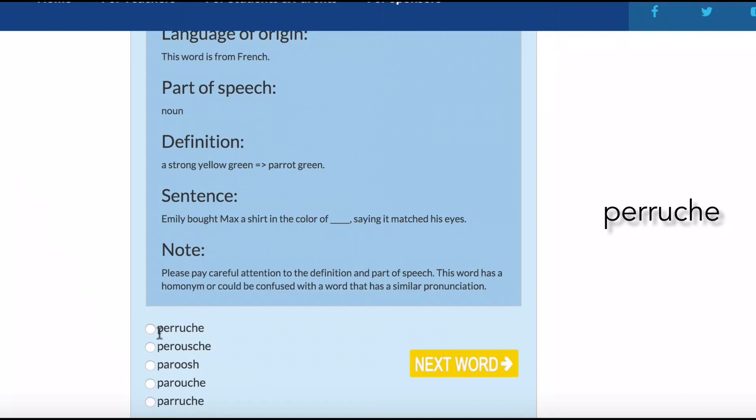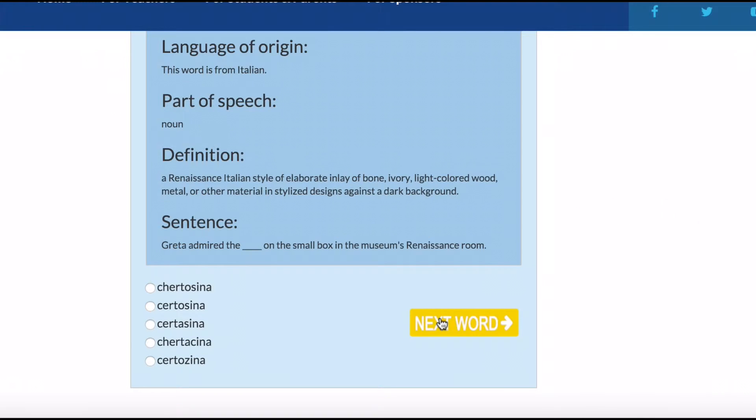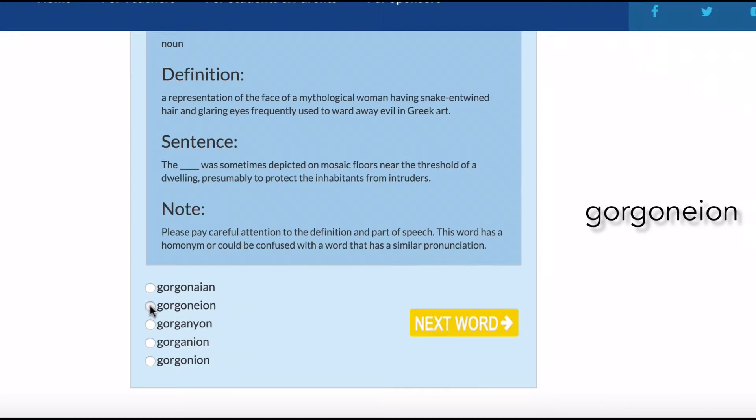Perouche is a strong yellow-green peregrine. And of course, it's the first one. Tarsorophy is in the middle. Chernosina is the second one. And Gorgonion is the second one again.